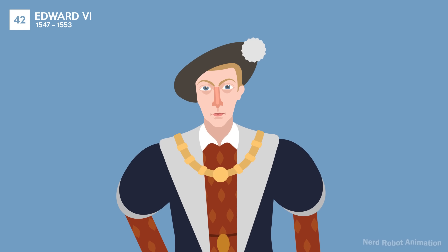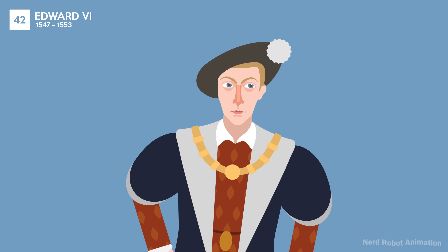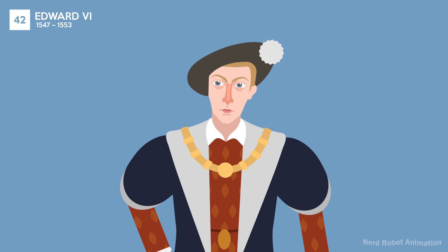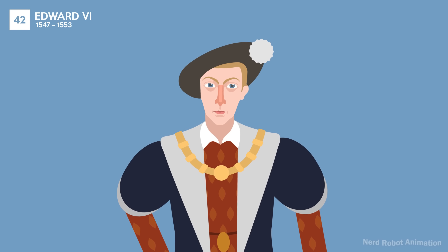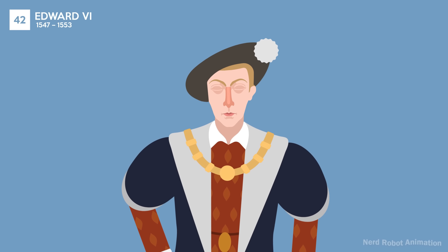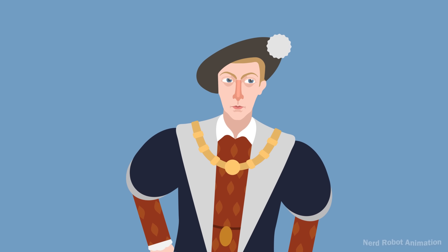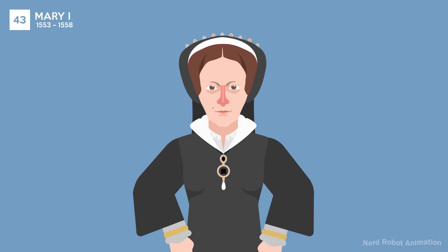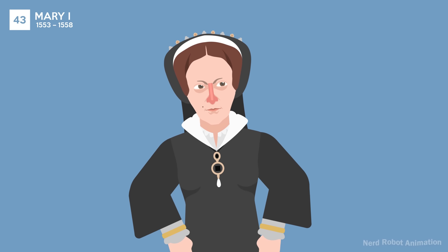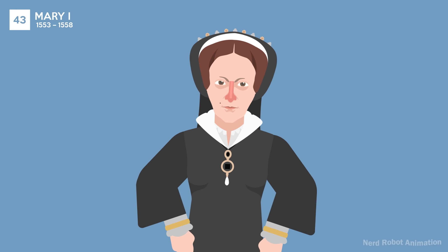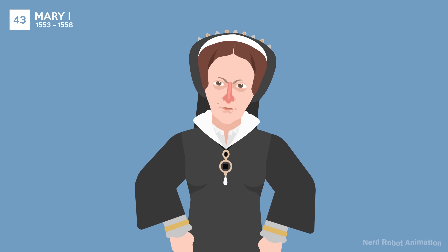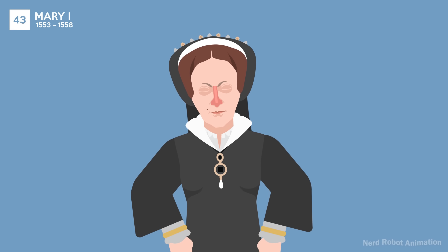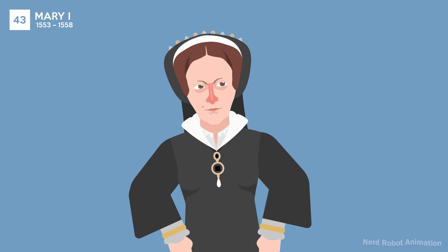Edward VI's reign was dominated by his Protestant regents, leading to significant religious reforms. He died young, leading to a succession crisis. Mary I, known as Bloody Mary for her persecution of Protestants, attempted to restore Catholicism. Her reign saw a return to papal supremacy and the burning of heretics.